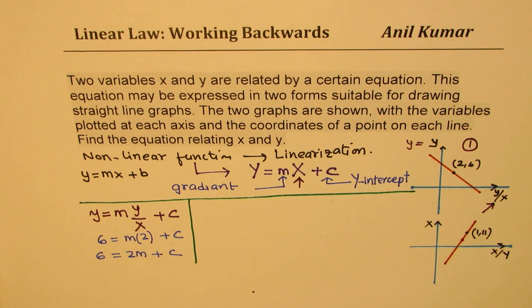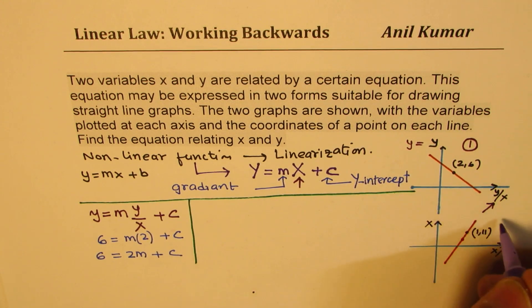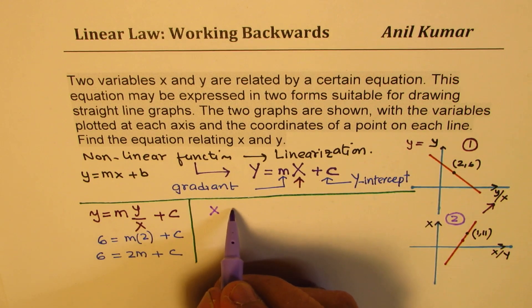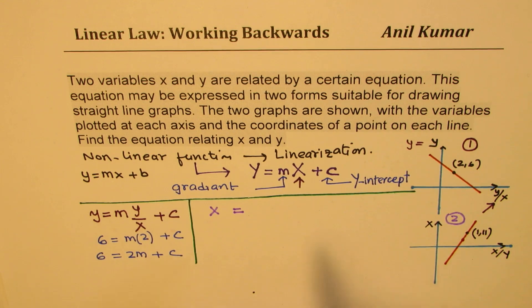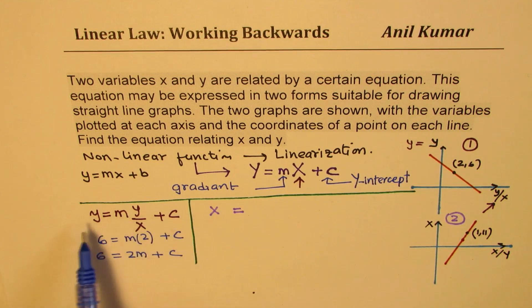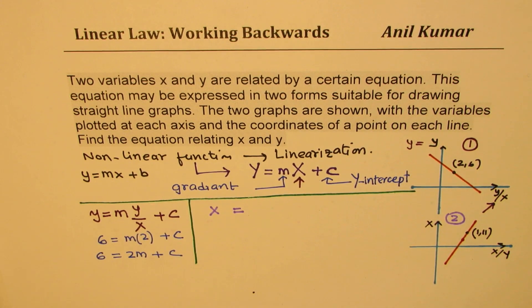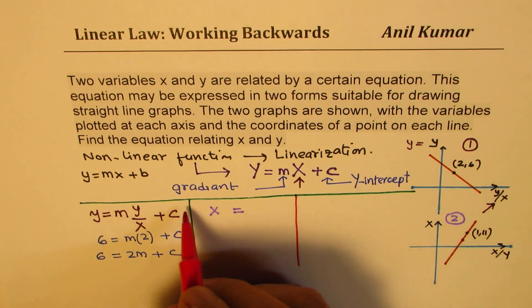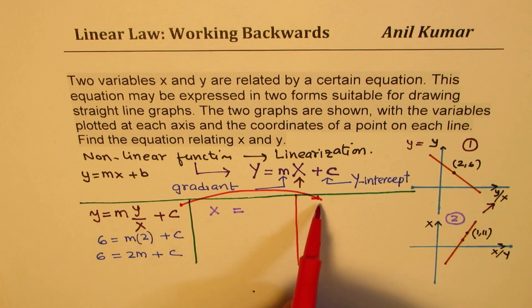Now let's look into the second graph. In this graph, the Y-axis value is X, so capital Y becomes X. On the horizontal axis we have X over Y. What we need to do is transform our equation into the other form — somehow we should get X here. So we need to rearrange the given equation to get the second form, as the problem states the equation can be expressed in two forms.